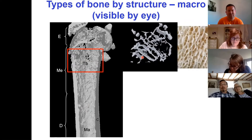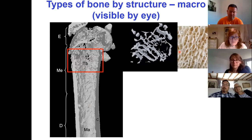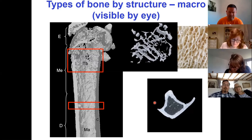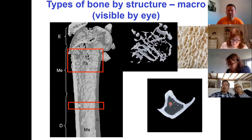In the metaphysis we have trabecular bone — sometimes called spongy or cancellous bone. It's called spongy bone because it looks like a sponge, and you can see this by eye. It holds a lot of bone marrow and transmits weight like the flying buttresses on cathedrals. Down in the diaphysis there is cortical bone — very dense and compact with very few holes, just the channels where the blood supply passes through.